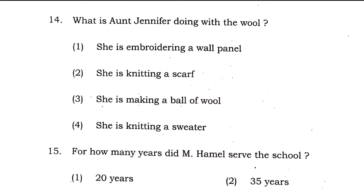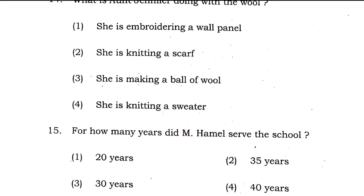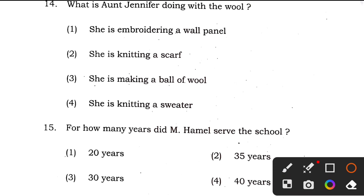Question 14: what is Aunt Jennifer doing with the wool? Though the book doesn't directly answer this, since she is making tigers on a panel, the logical answer involves embroidery. Options 2 and 3 are completely wrong. She is embroidering a wall panel, so the answer to question 14 is option 1, which includes the tigers.